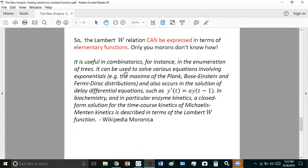Let's go back to the presentation. So, the Lambert W relation or function, the morons can't make up their minds, can be expressed in terms of elementary functions. It is useful in combinatorics. For instance, in the enumeration of trees, it can be used to solve various equations involving exponentials. The maxima of the Planck, Bose, Einstein, and Fermi-Dirac distributions. And also,